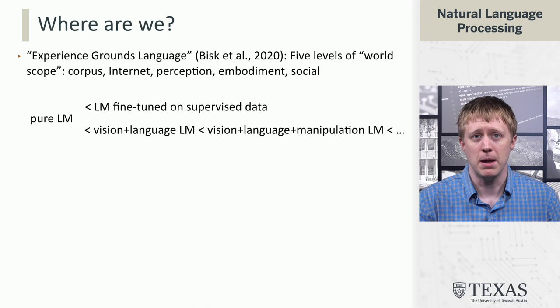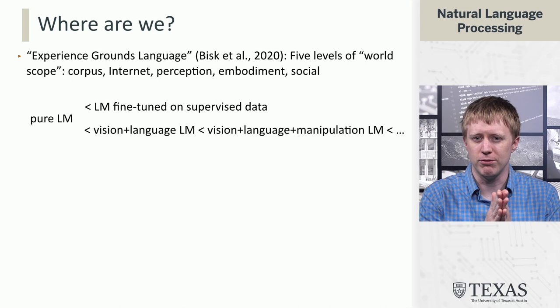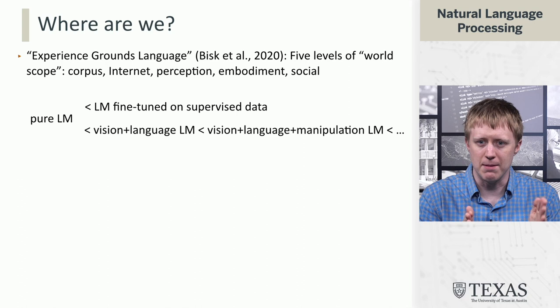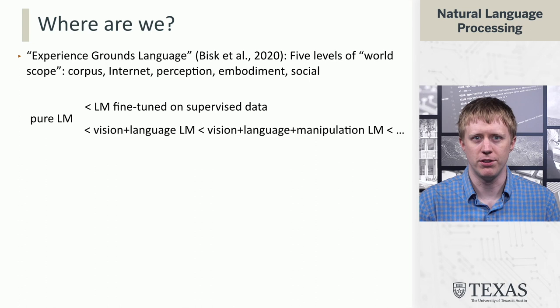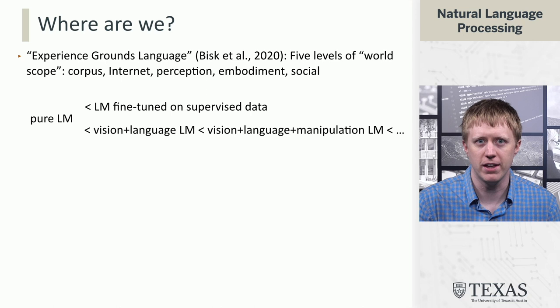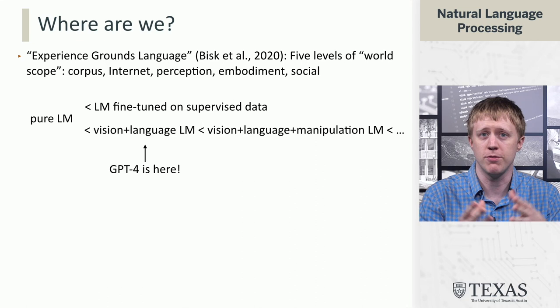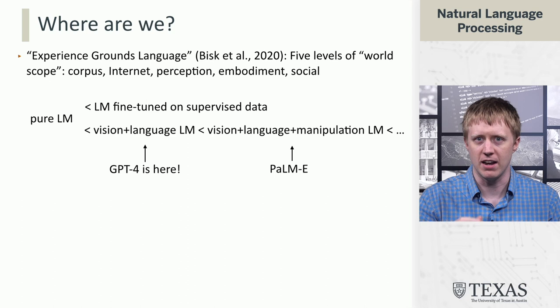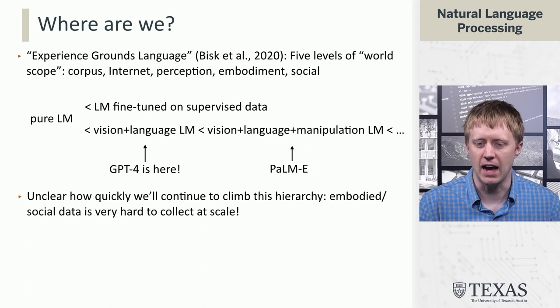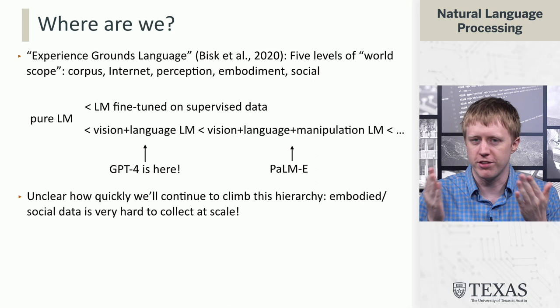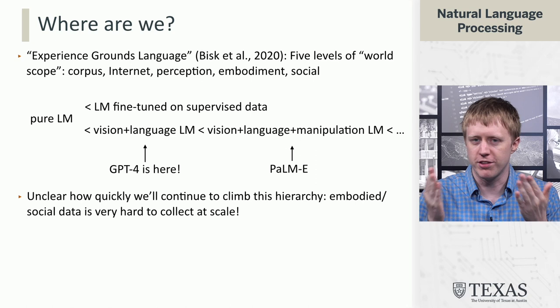There's a paper called 'Experience Grounds Language' by Yonatan Bisk et al. that thinks about five levels of world scope: corpus, internet, perception, embodiment, and social. It's reasonably well accepted that a pure language model is more restrictive than one tuned on both language and images — the second is a superset of the first. Similarly, adding manipulation adds embodiment and interaction with the world. It's taking time to climb through this hierarchy with models as good as GPT-4, but this trend will likely continue as the field progresses.